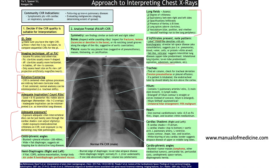Regarding the trachea, find the air column and check for tracheal deviation. Tracheal deviation often indicates tension pneumothorax or pleural effusion. If the patient is intubated, the endotracheal tube tip should ideally be four centimetres above the carina. The hilum contains the pulmonary arteries and veins, main stem bronchi, and lymph nodes. If the hilar contour is straight or convex instead of concave, there is hilar enlargement.